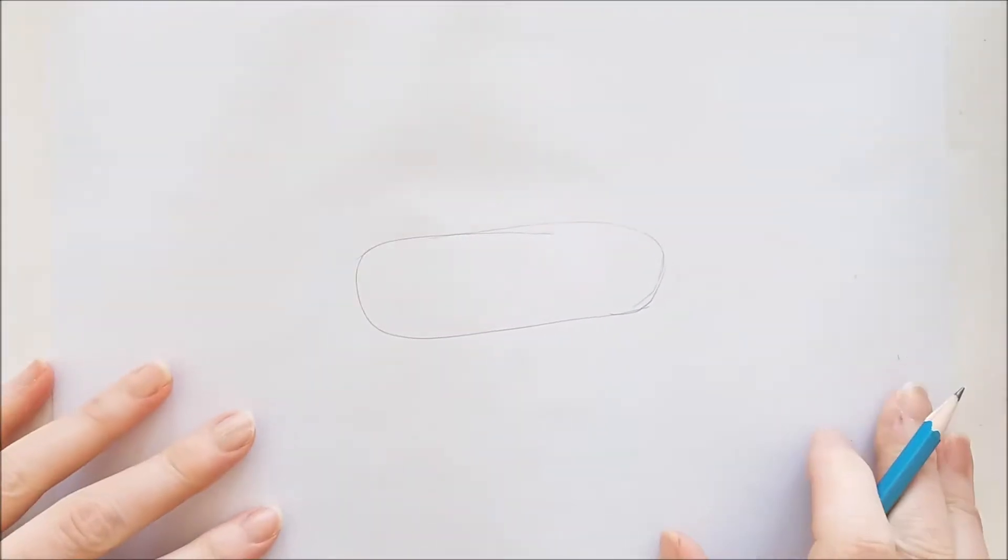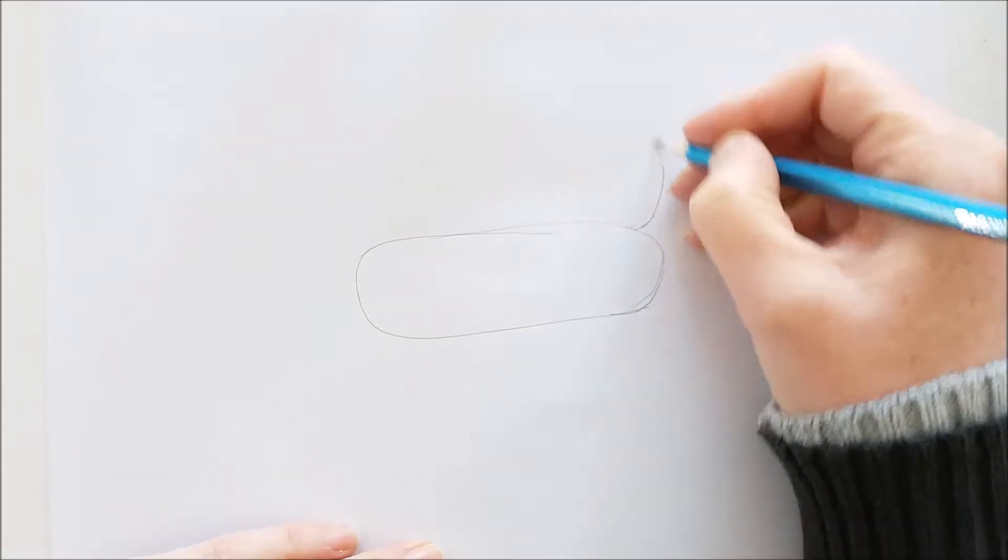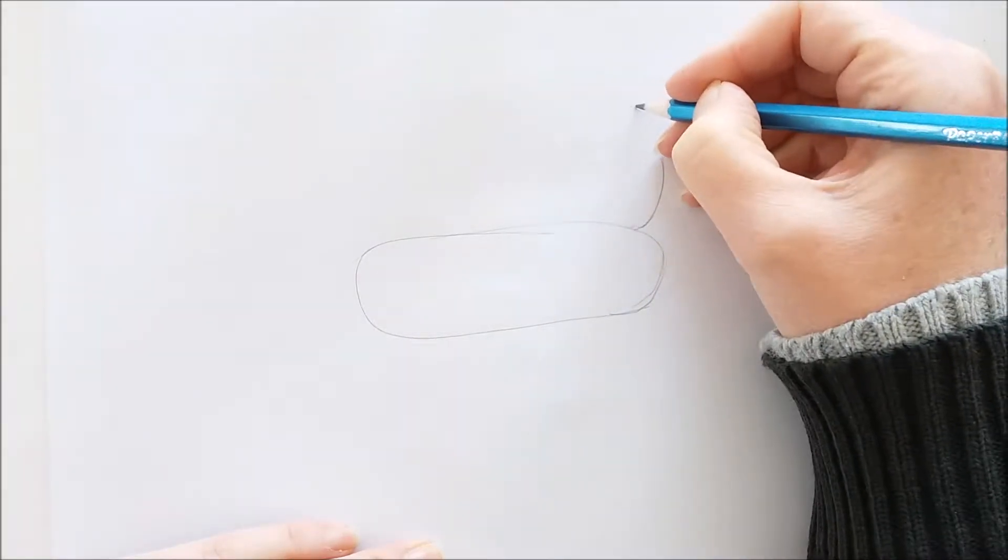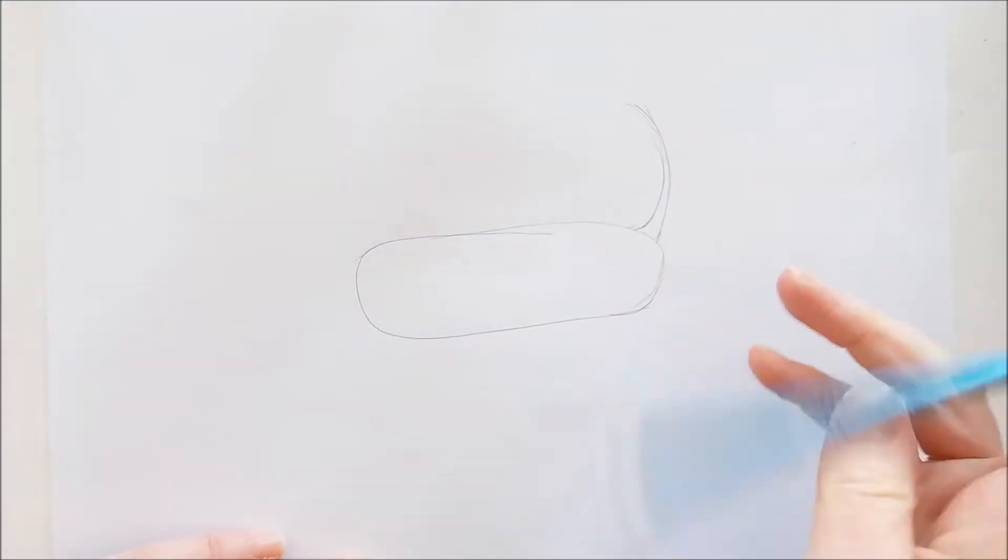And this is going to make up the body of our dog. I'm drawing a little curved line here for the tail and another little curved line right here for the back of the tail.